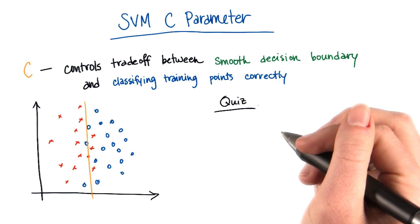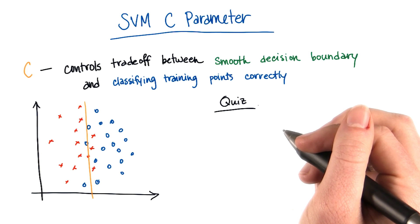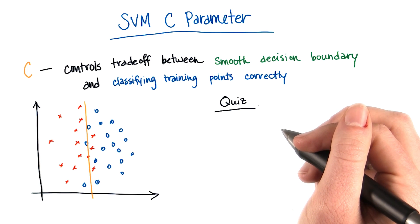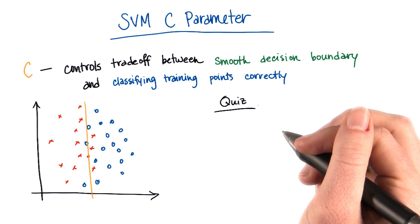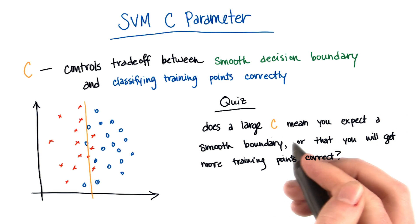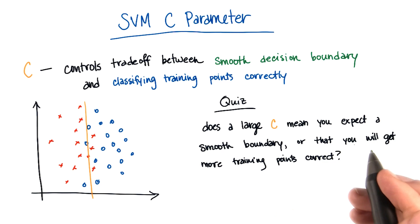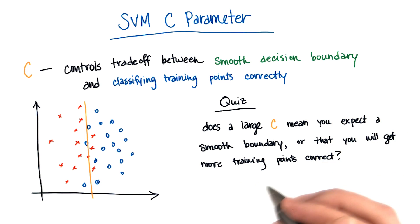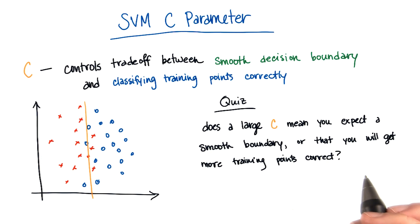So here's a quiz for you. It's a little bit tricky because you'll have to go to the sklearn documentation, or potentially play around with some code on your own to come up with the answer. The question is: let's say you have a large value of C — does that mean you're going to get a smooth boundary, or that you'll get more training points correct?